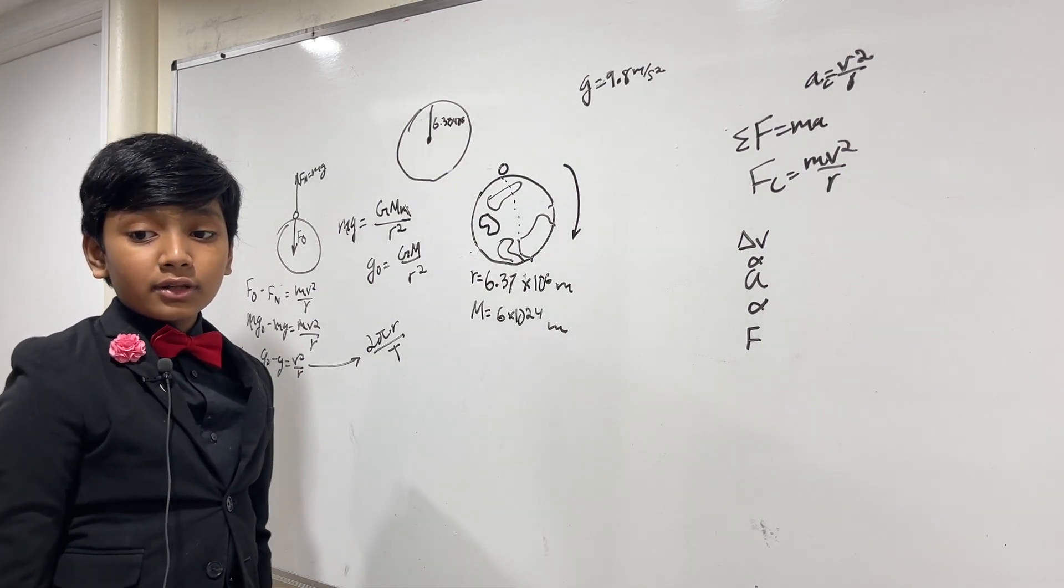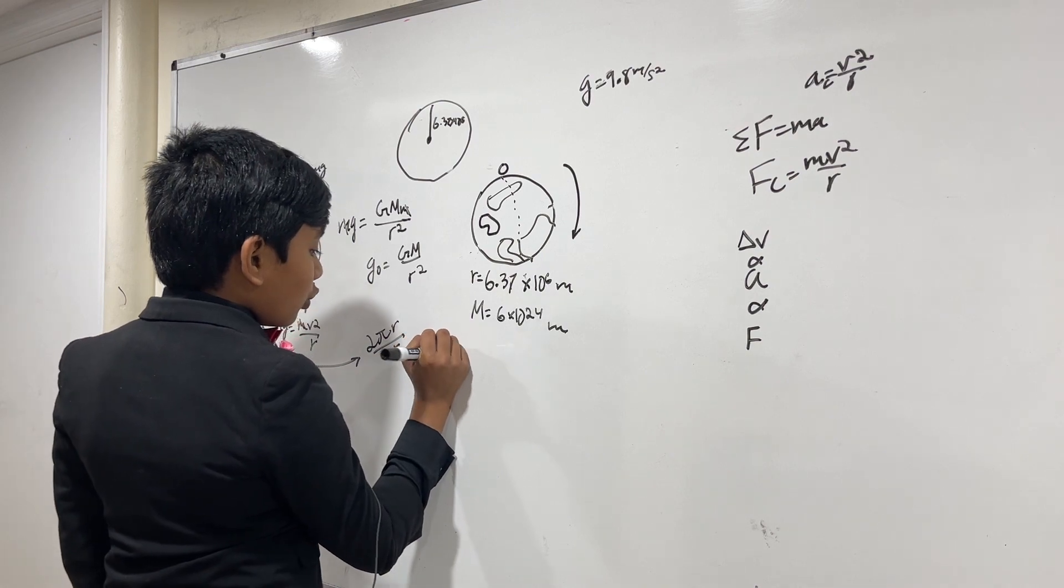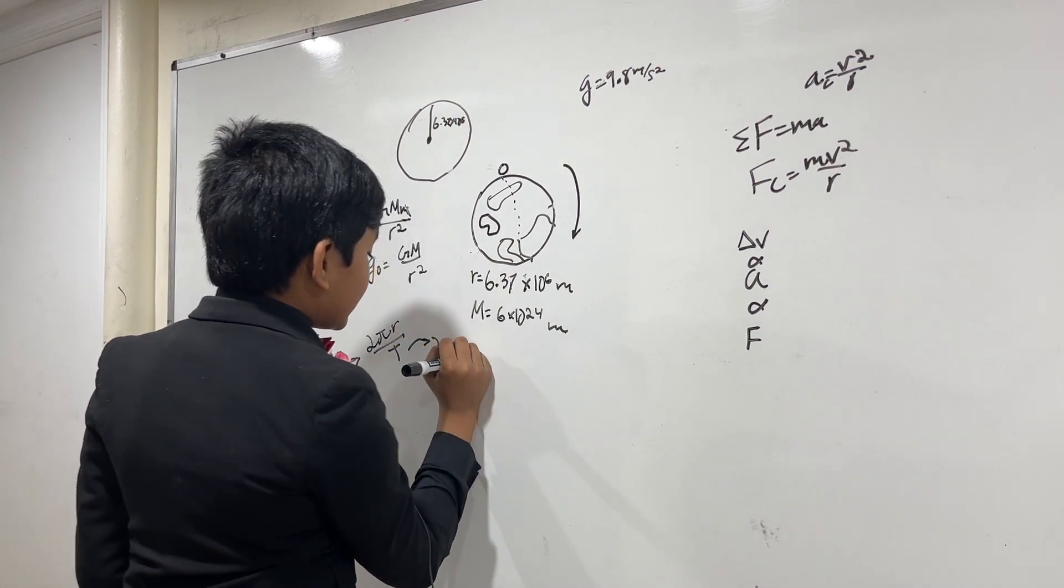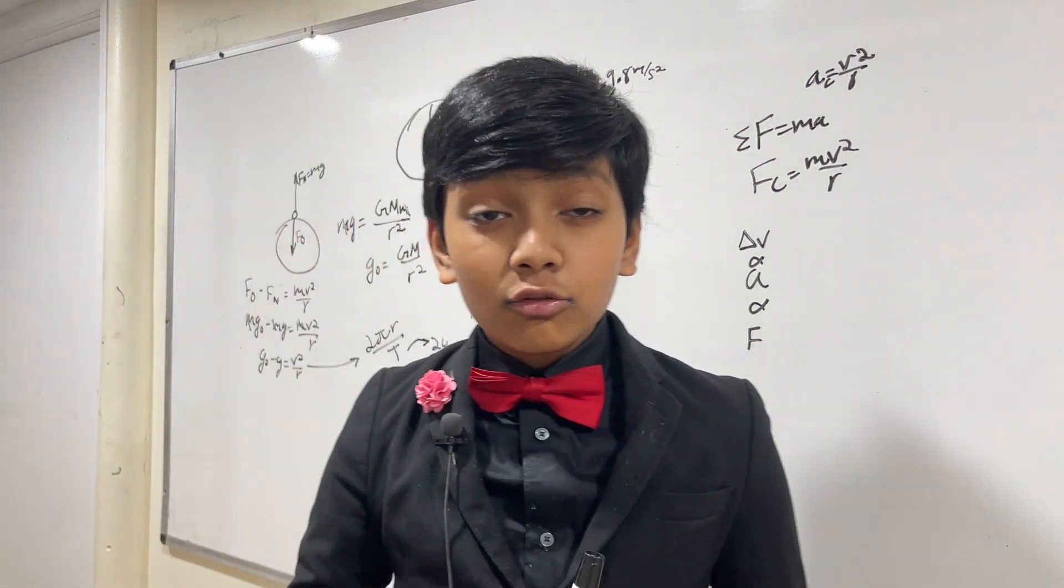And what's T? Well, how long does the Earth take to do one full revolution? 24 oros. And you can convert that to seconds if you want to. I'm not going to do it because I'm not a human calculator. Don't trust the videos.